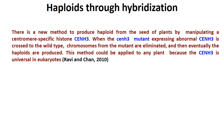Haploid induction through hybridization is another technique. A new method where plants are manipulated by centromere-specific histone CENH3. When the mutant CENH3 in recessive form expressed abnormal CENH3 is crossed with wild type, chromosomes from the mutant are eliminated and the haploid are produced. This method could be applied to any plant because CENH3 is universal in eukaryotes.